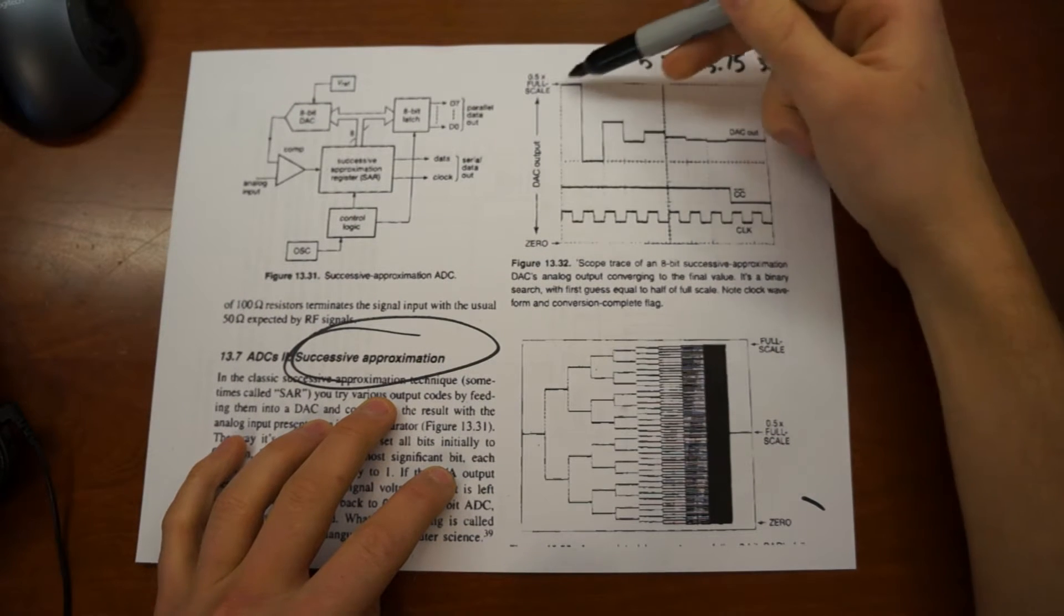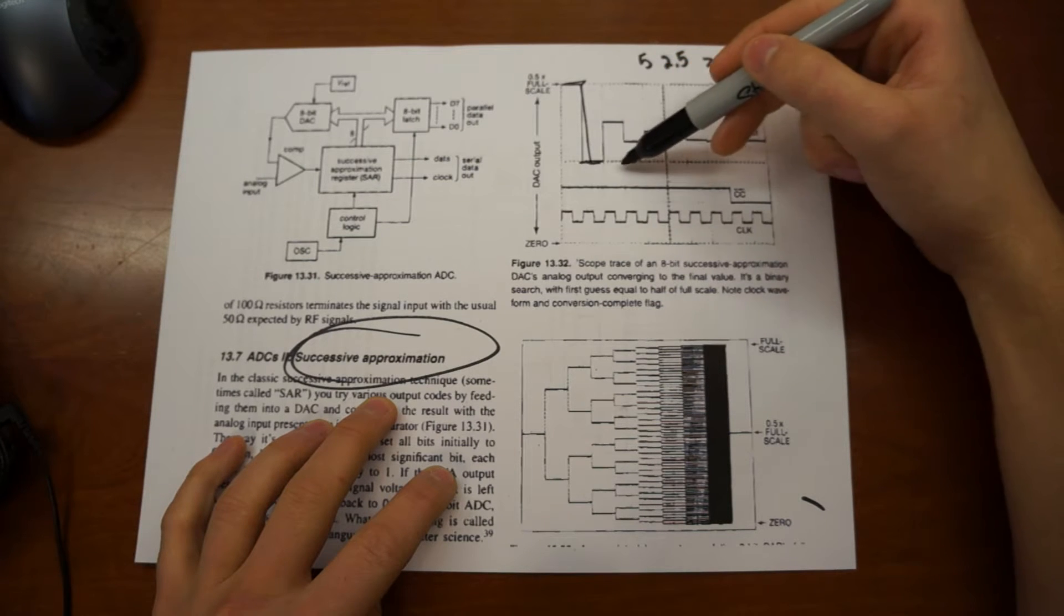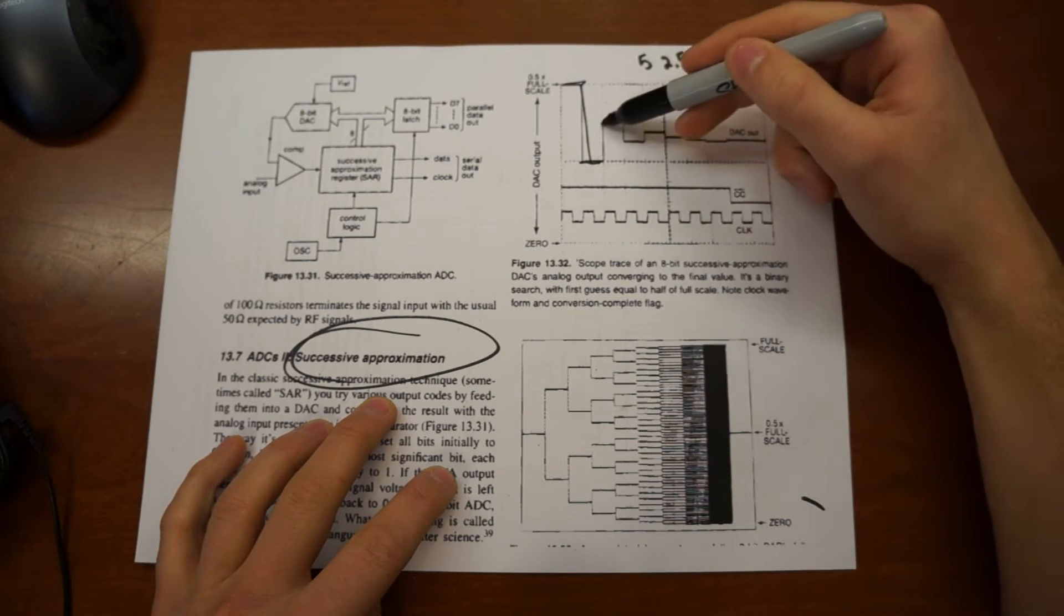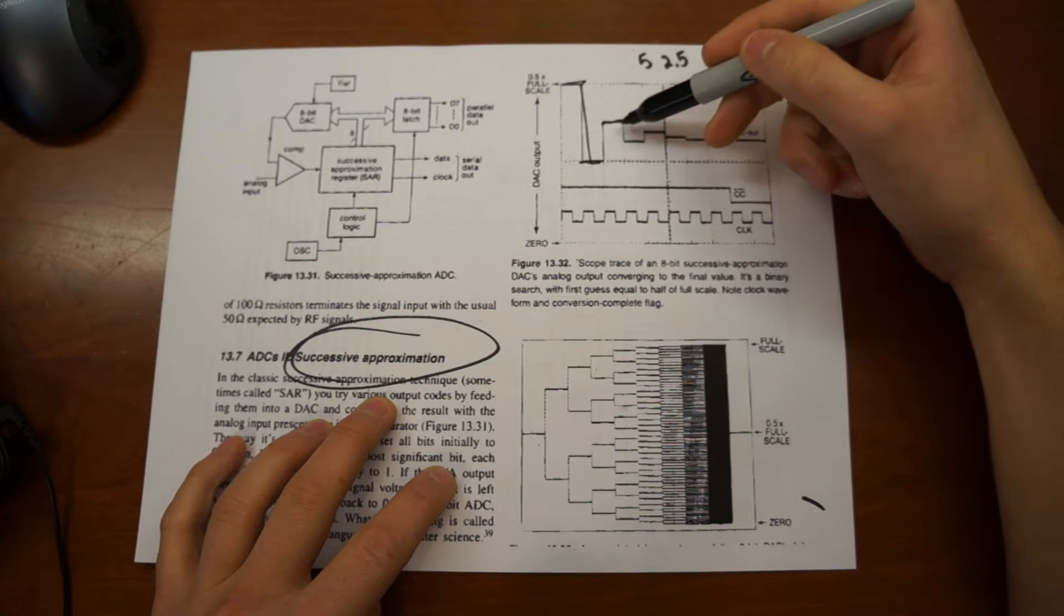And in this case, we have, the DAC is honing in on some value. You can see it, it guesses in the middle and then, okay, no, my value is greater. So the DAC tries a greater value. That's another division divided by two.